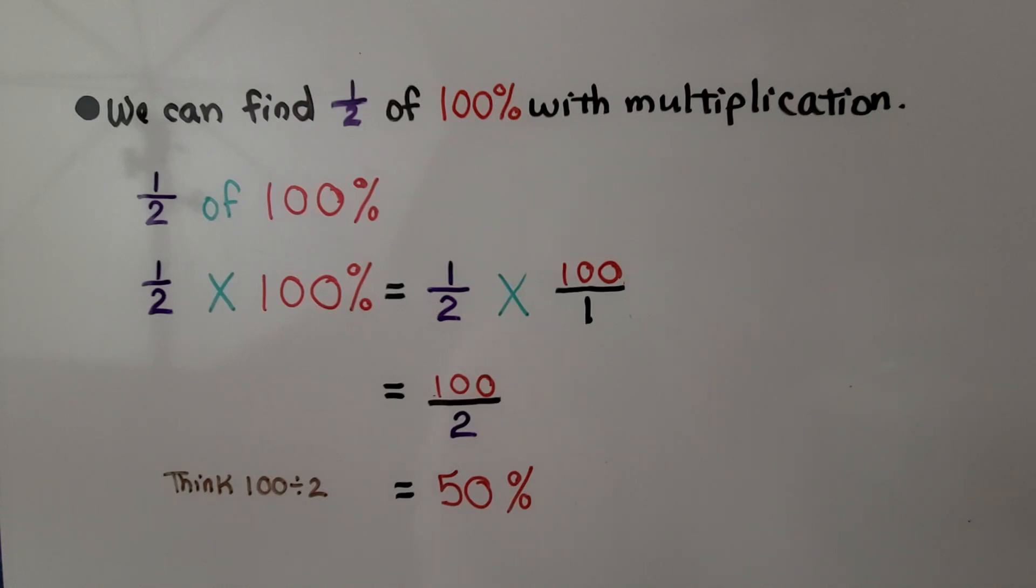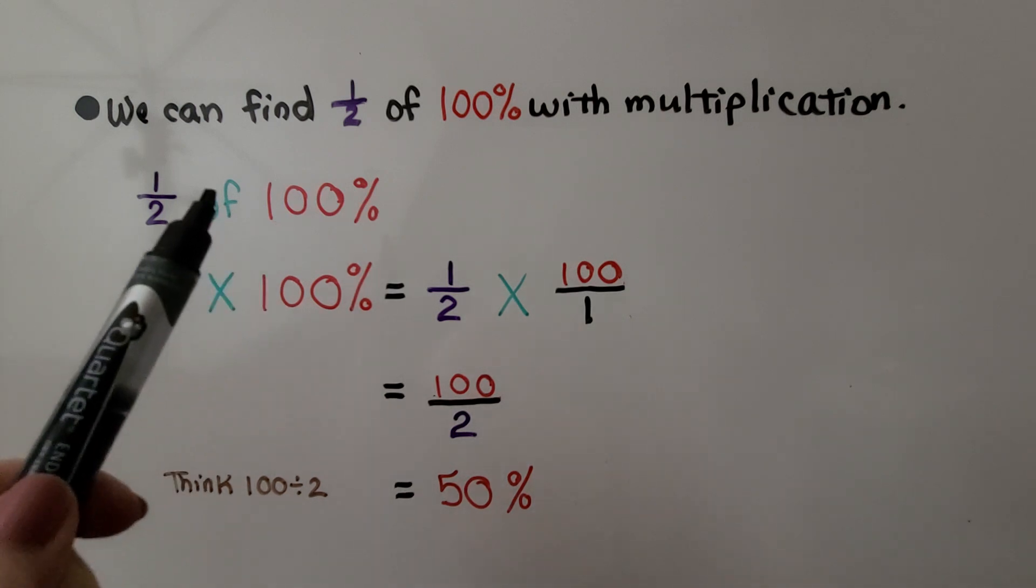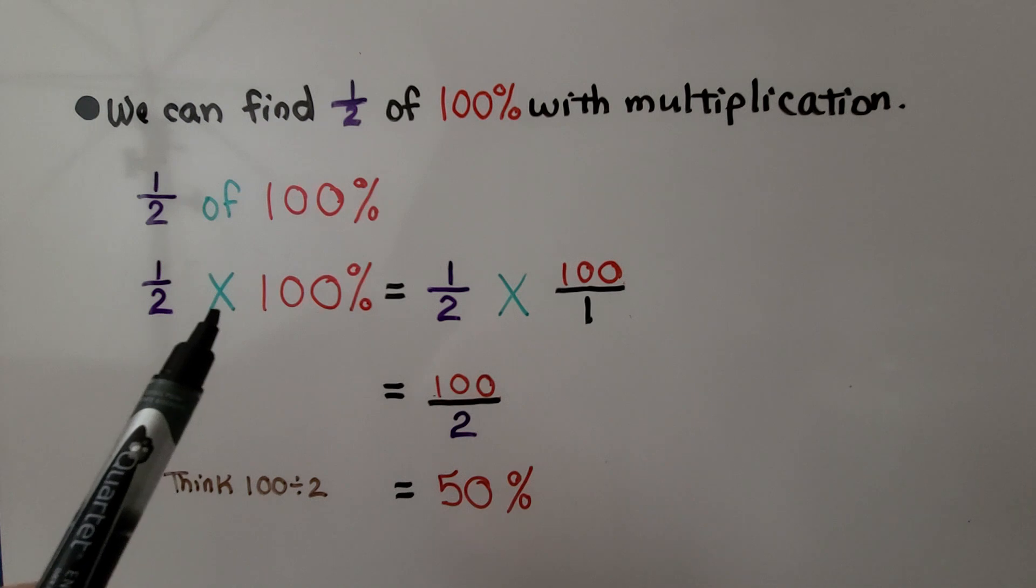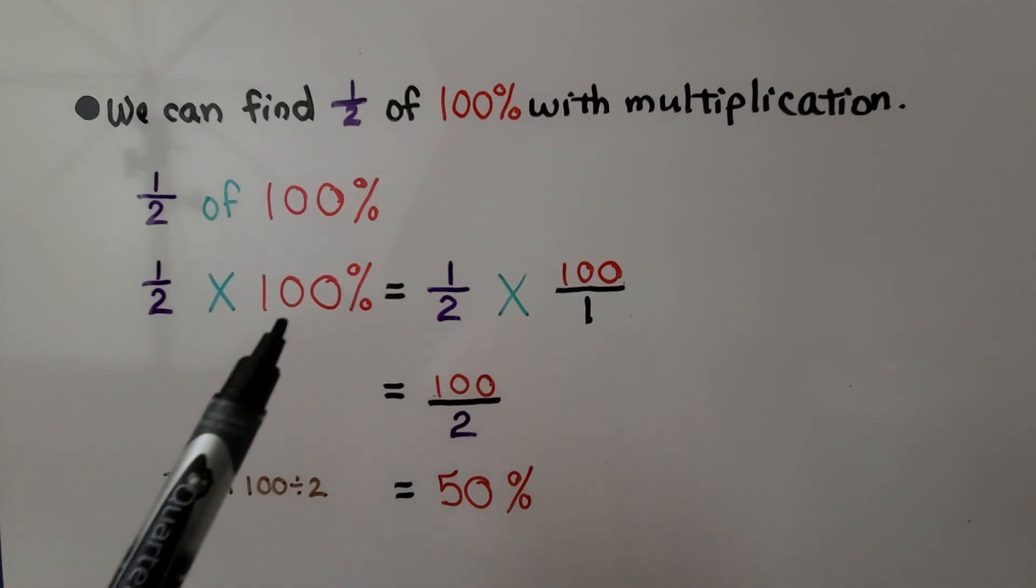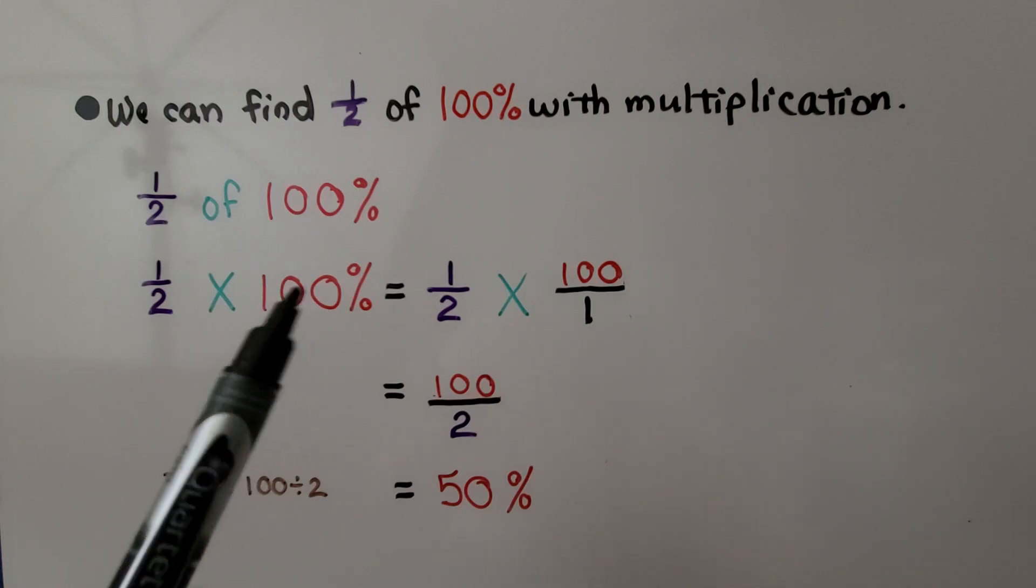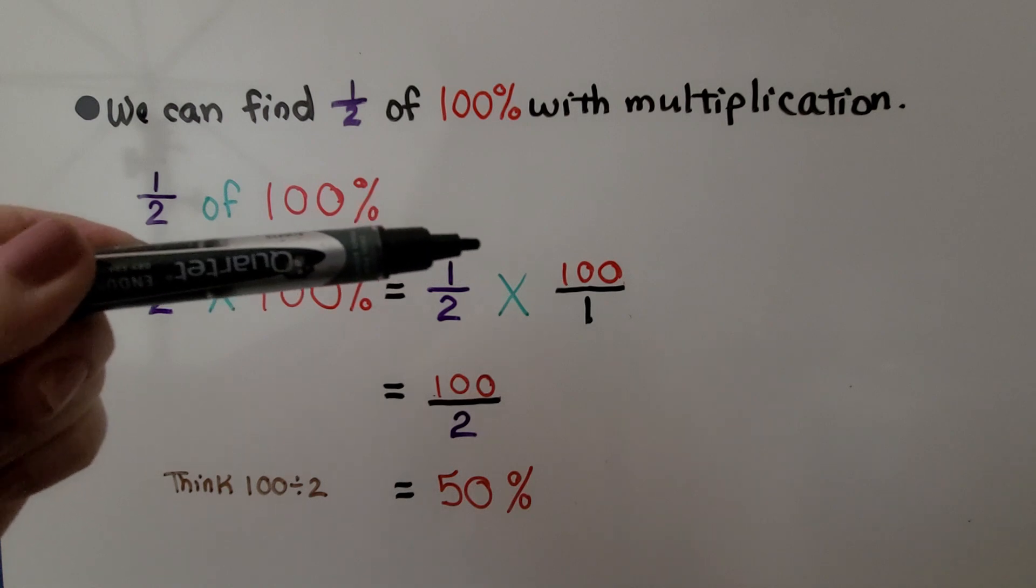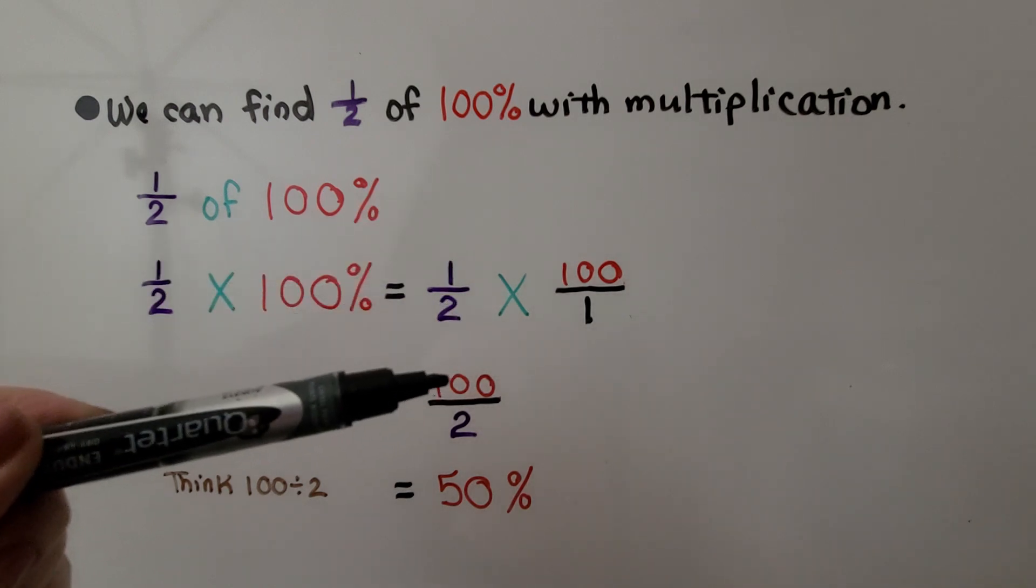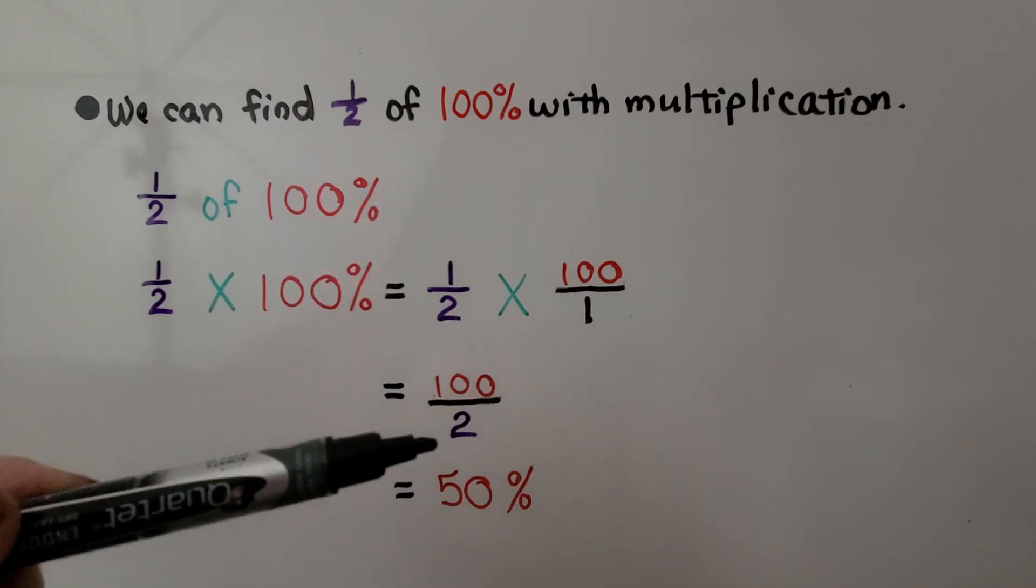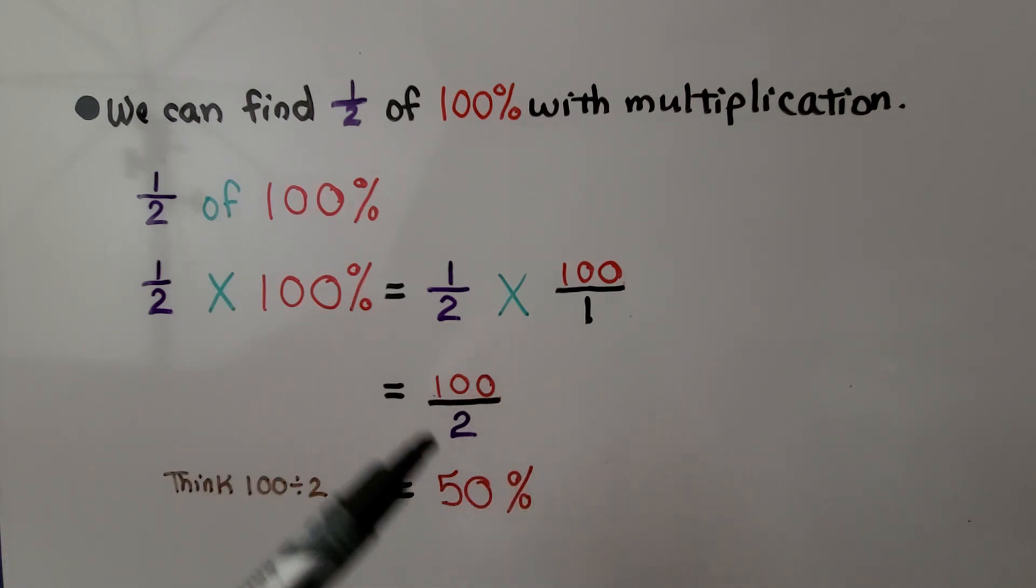We can find half of 100% with multiplication. We have half of 100%. We think of the of as multiplication, so we have one-half times 100%. And we can write this with a denominator of 1, so we can multiply straight across. We're going to get 100 as our numerator and 2 as our denominator. And this is a division problem. We think 100 divided by 2, that's going to be 50. We have our percent sign. It's 50%.